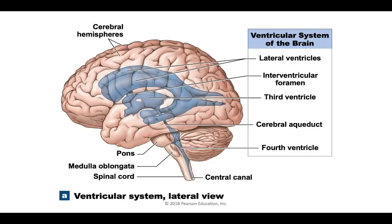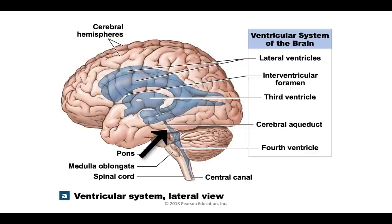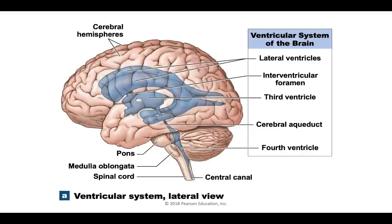There are two lateral ventricles, a third ventricle, and a fourth ventricle. The third and fourth ventricles are connected by a duct called the cerebral aqueduct. The lateral ventricles are connected to the third ventricle by a passageway called the interventricular foramen. Cerebrospinal fluid passes through the ventricles from the lateral ventricles into the third ventricle, into the fourth ventricle, and then from the fourth ventricle into the central canal of the spinal cord.